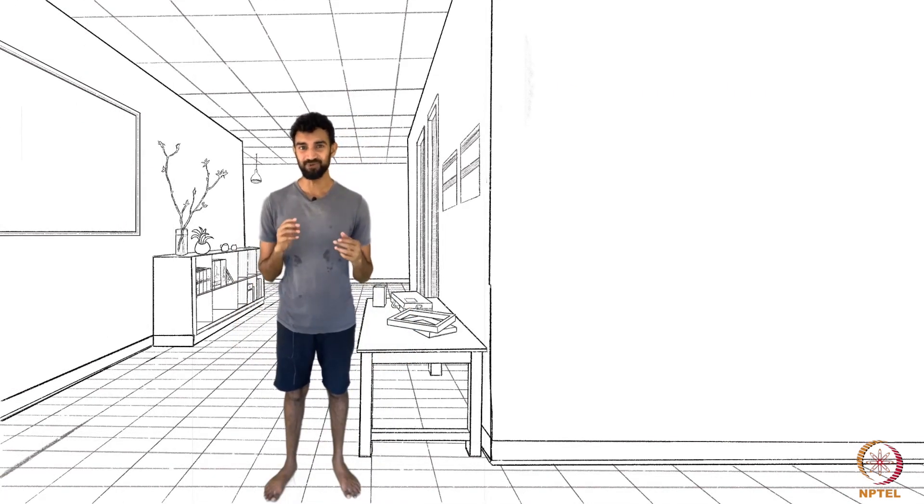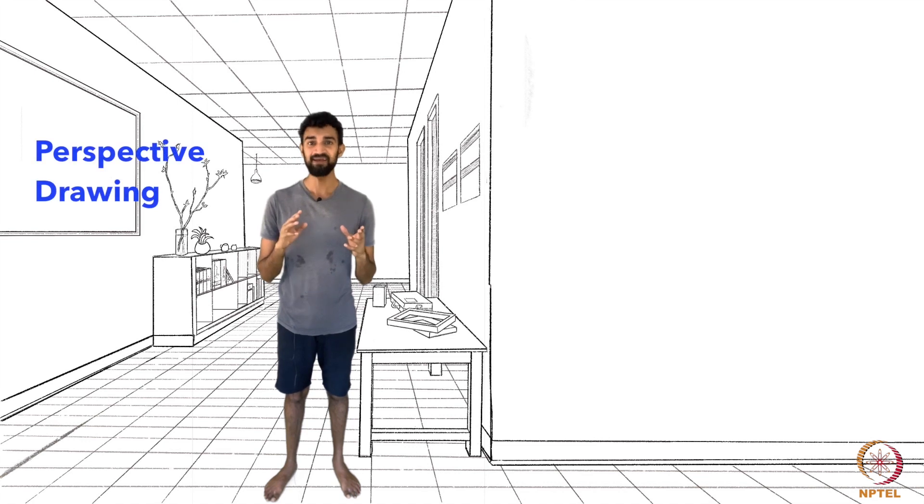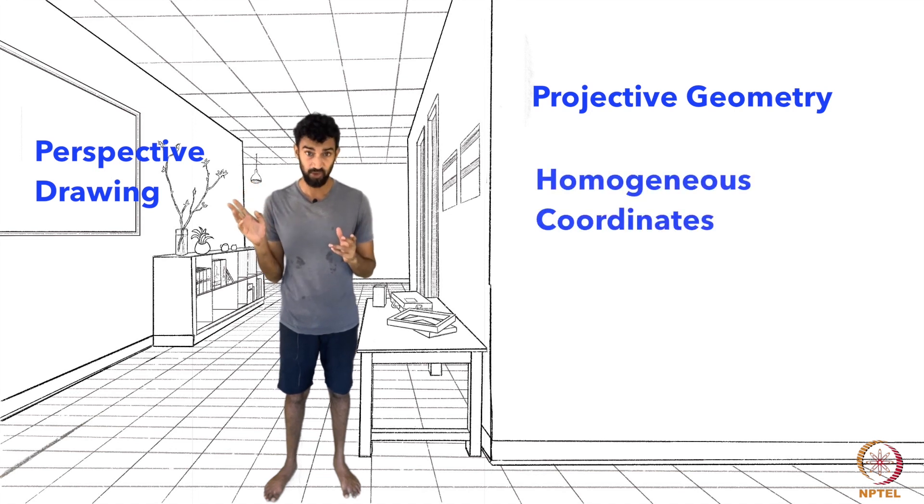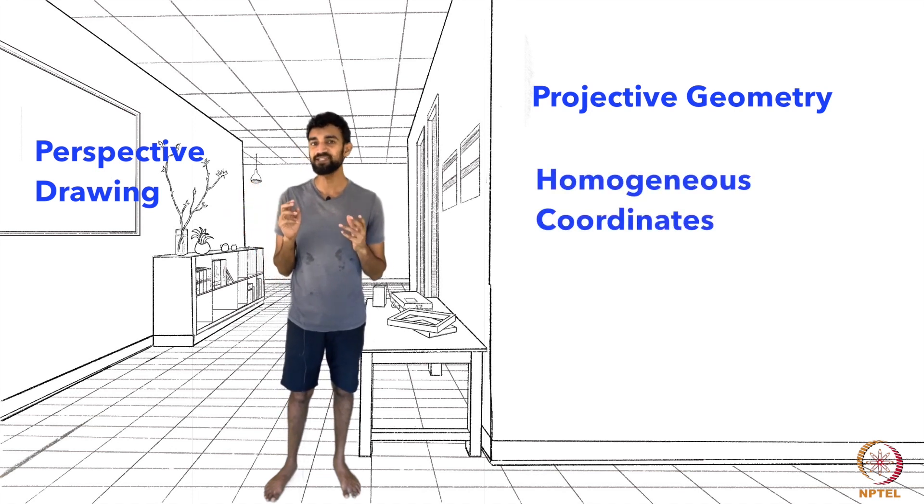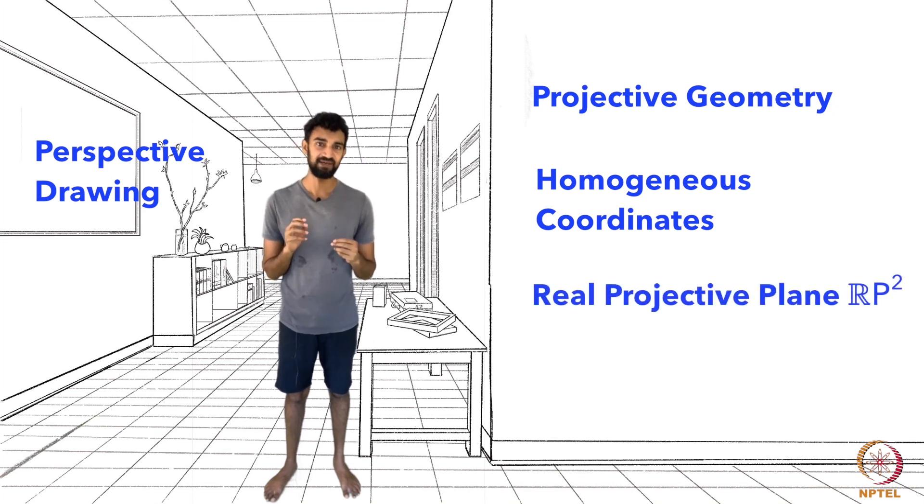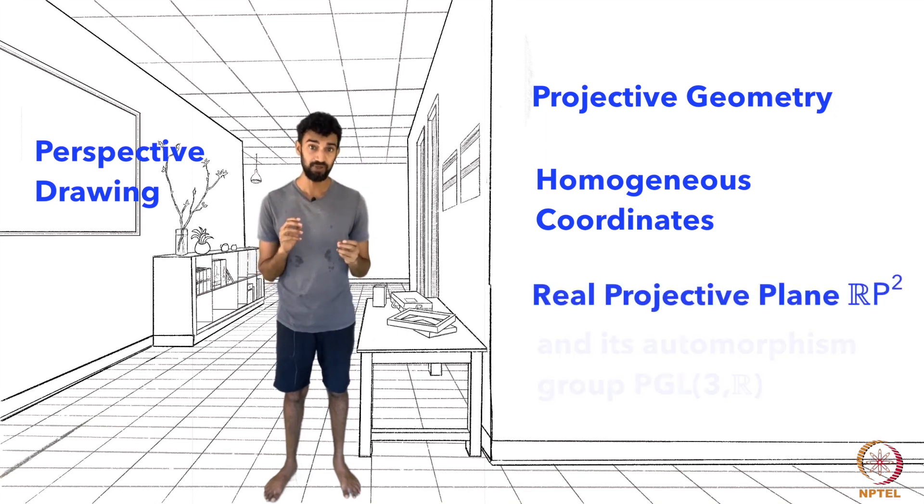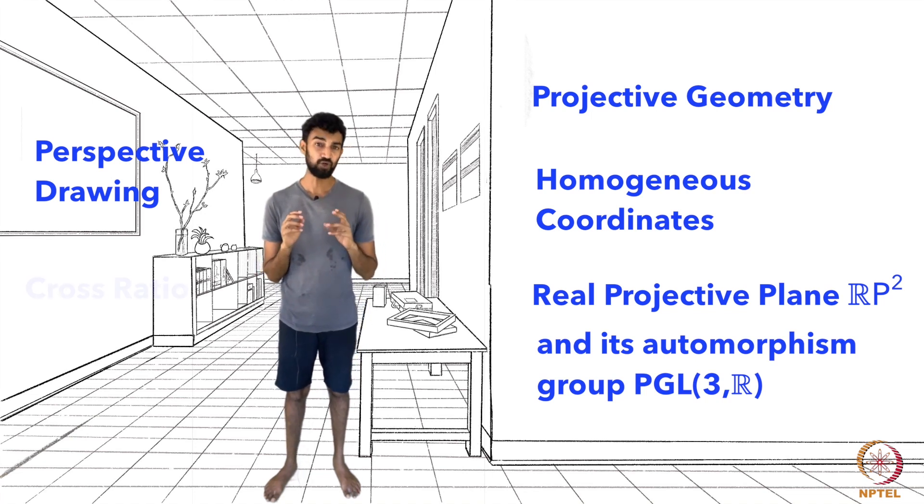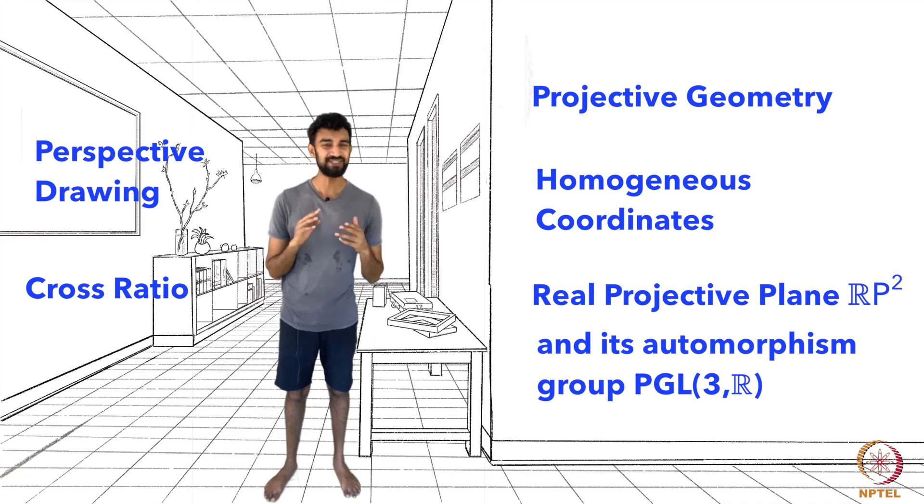As the course progresses, we'll situate perspective drawing in the framework of projective geometry. And we'll get familiar with the algebra of homogeneous coordinates. We'll also get to know a topological space known as the real projective plane, as well as the matrix group which governs its transformations. Finally, we'll study the cross-ratio, which is known as the fundamental invariant of projective geometry, because it stays the same even as you switch perspective.